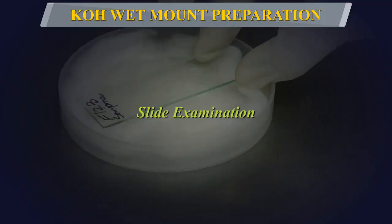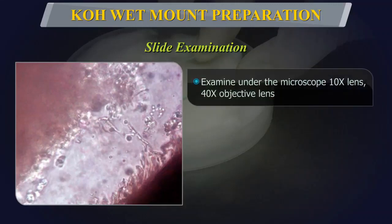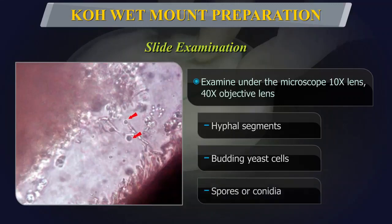As soon as the specimen clears, it should be examined under the microscope — first using the 10x lens, then proceeding to the 40x objective lens. The condenser iris diaphragm should be sufficiently closed to allow better contrast. Hyphal segments, budding yeast cells, spores, or conidia can be observed according to the type of fungal infection.